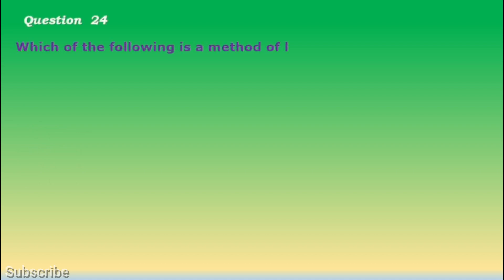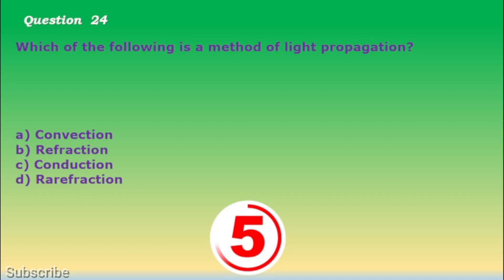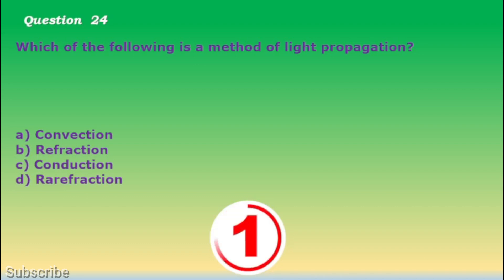Question number 24. Which of the following is a method of light propagation? a. Convection, b. Refraction, c. Conduction, d. Rarefaction. The correct answer is letter b. Refraction.